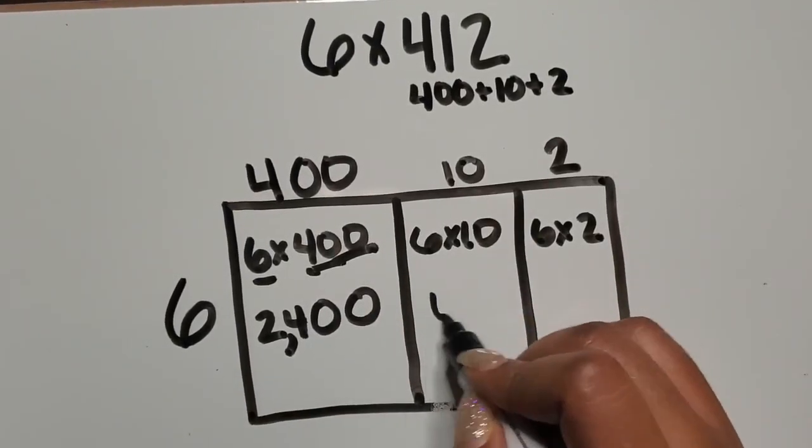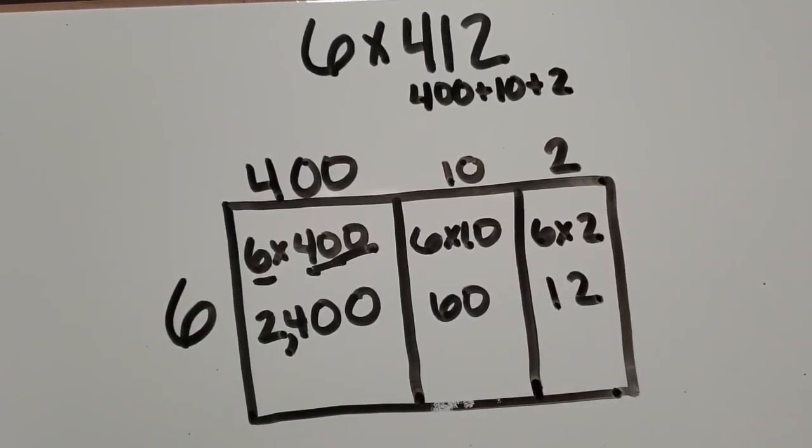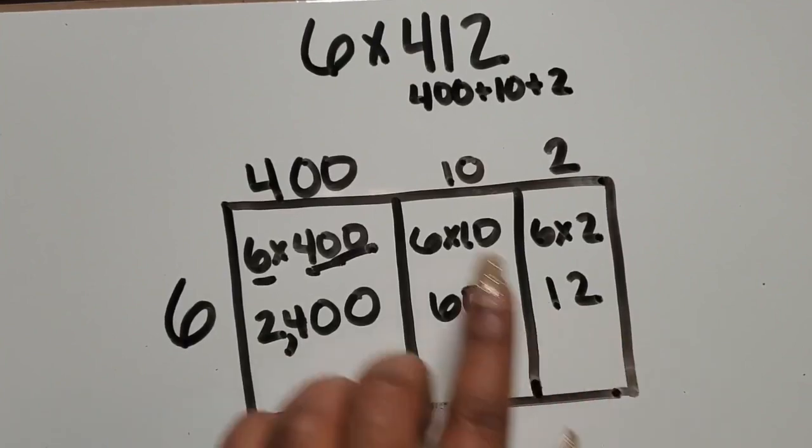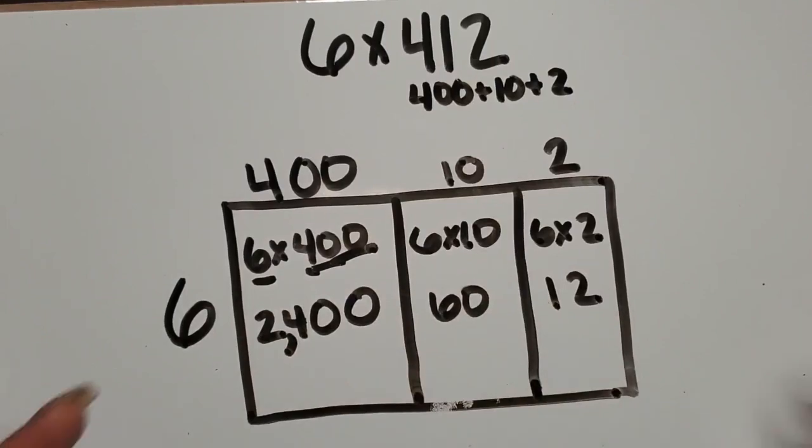6 times 10 is 60, and 6 times 2 is 12. So we have part of our product because we decomposed that three-digit number.